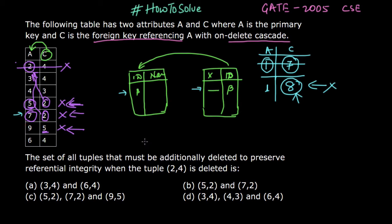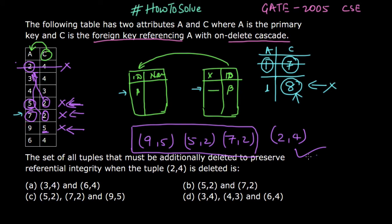The order of deletion will be: first we have to delete (9, 5), then we have to delete (5, 2) and (7, 2), and then we will delete the required tuple, that is (2, 4). These 3 tuples are additional tuples which we have to delete before deleting this tuple.